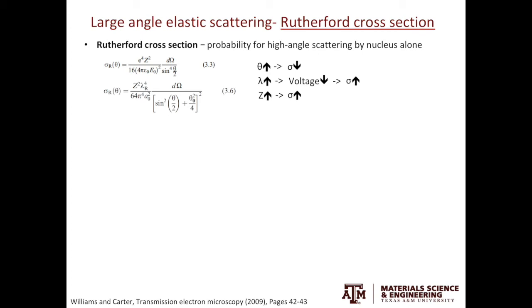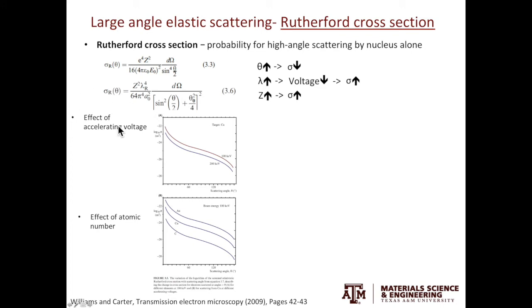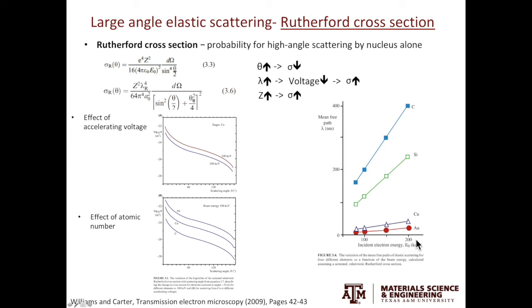Let's look at a few examples. In all cases, you see that as the scattering angle increases, the probability of scattering decreases. And when the voltage of the TEM decreases, the probability of scattering increases. Finally, as the atomic number increases, the probability of scattering also increases. Because 1 over cross-section is equal to the mean free path, that's something you have learned in the previous videos, we can also look at the effects of the acceleration voltage and z on the mean free path. Higher the acceleration voltage, higher the mean free path. Higher the z from carbon to silicon to copper to gold, lower the mean free path.